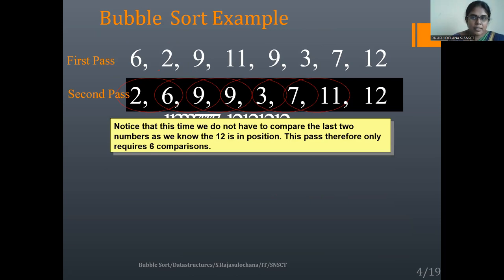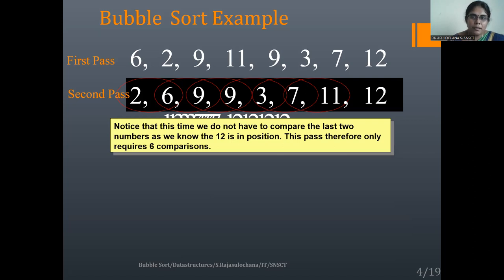Now we have seen the first pass. In the second pass, the same process continues. Compare 2 and 6 — no change because 2 is not greater than 6. Similarly, the second and third comparisons also show no change. In the fourth comparison, 9 is greater than 3, so 9 and 3 are swapped. In the next comparison, since 9 and 3 were swapped, compare 9 with 7 — 9 is greater, so 9 and 7 are swapped. Then 9 is compared with 11 — no swap required. And 11 and 12 — no swap required. This is the result of the second pass.